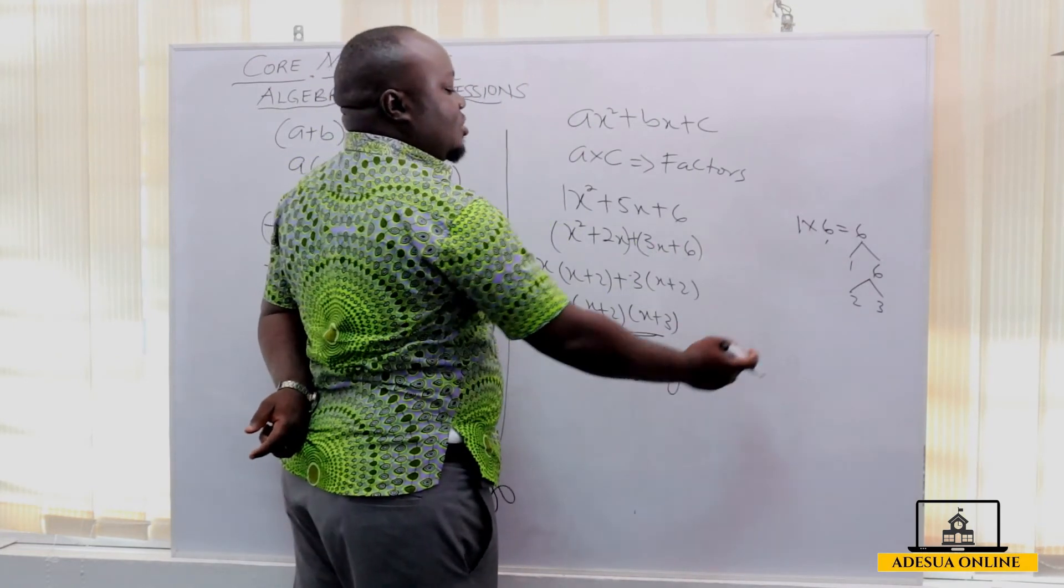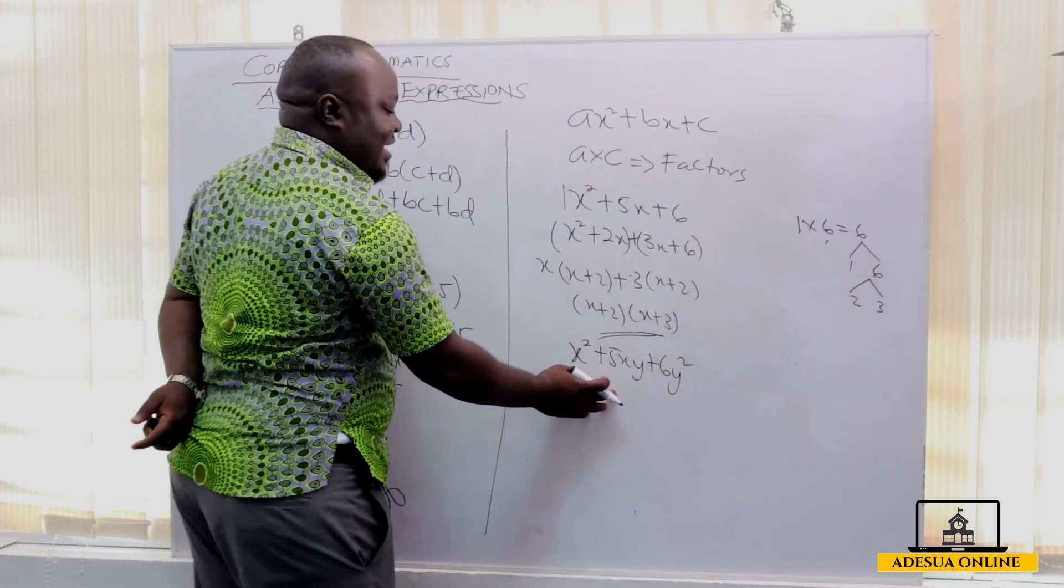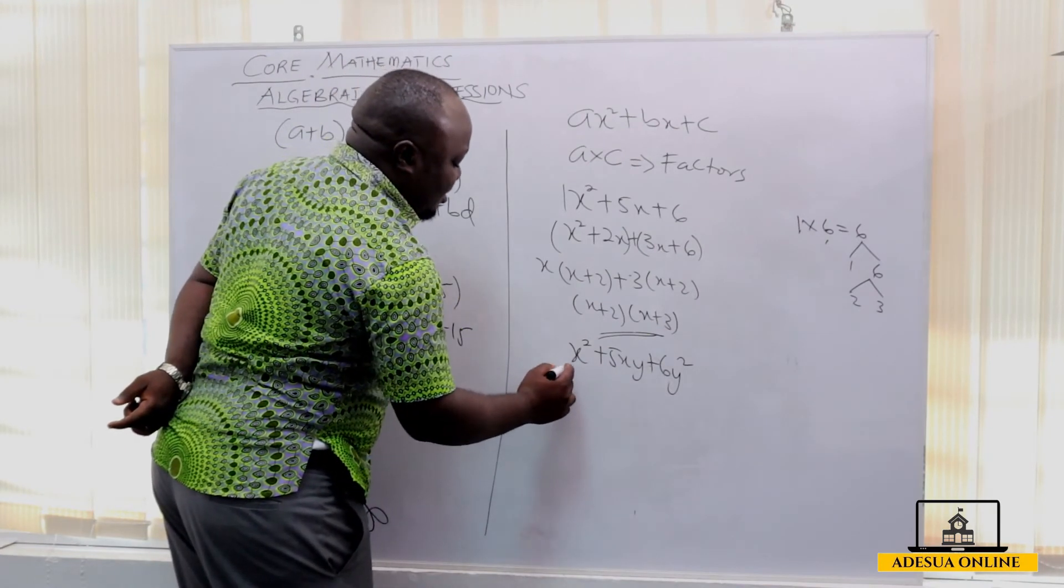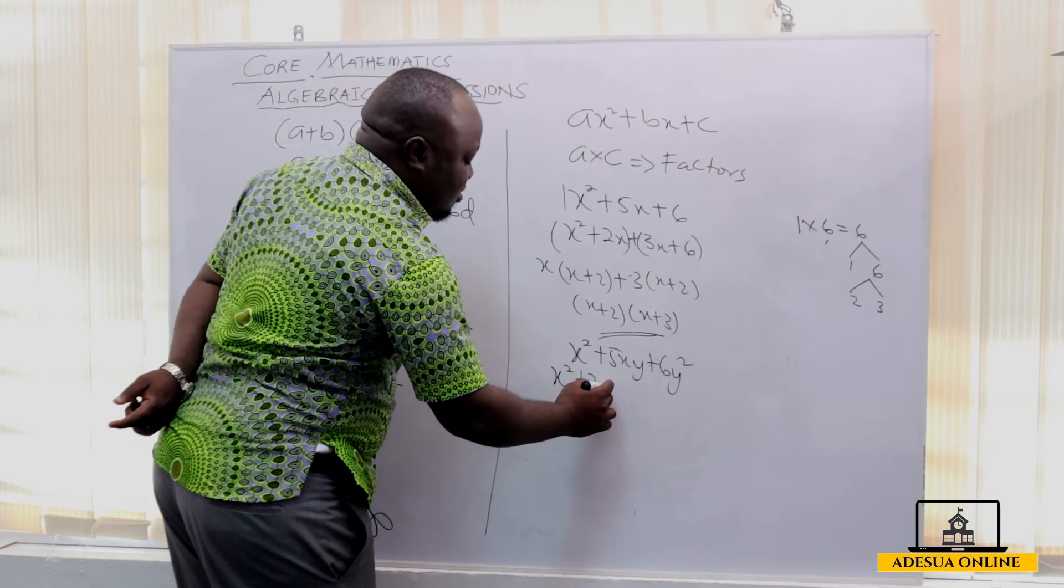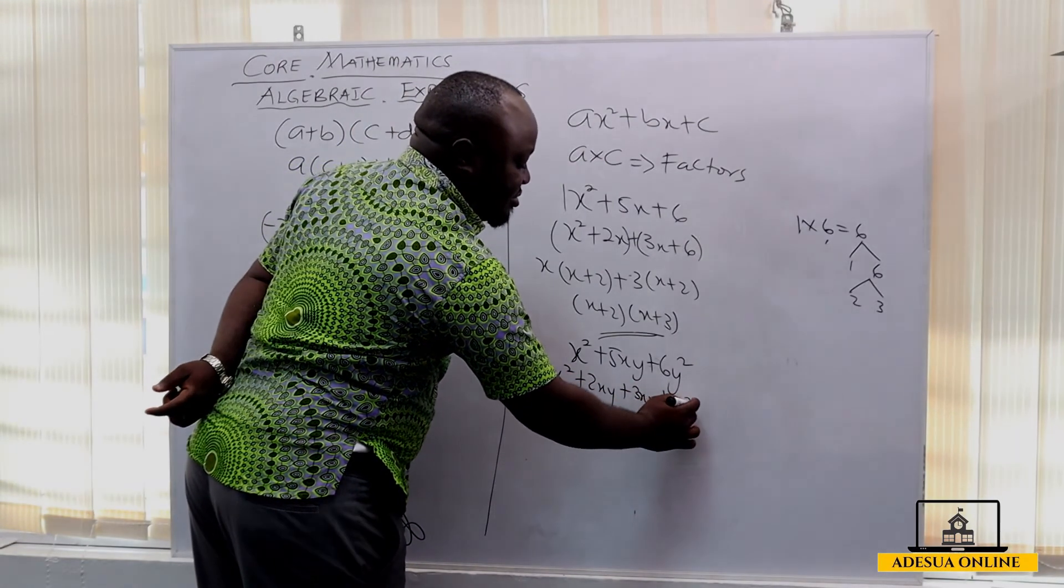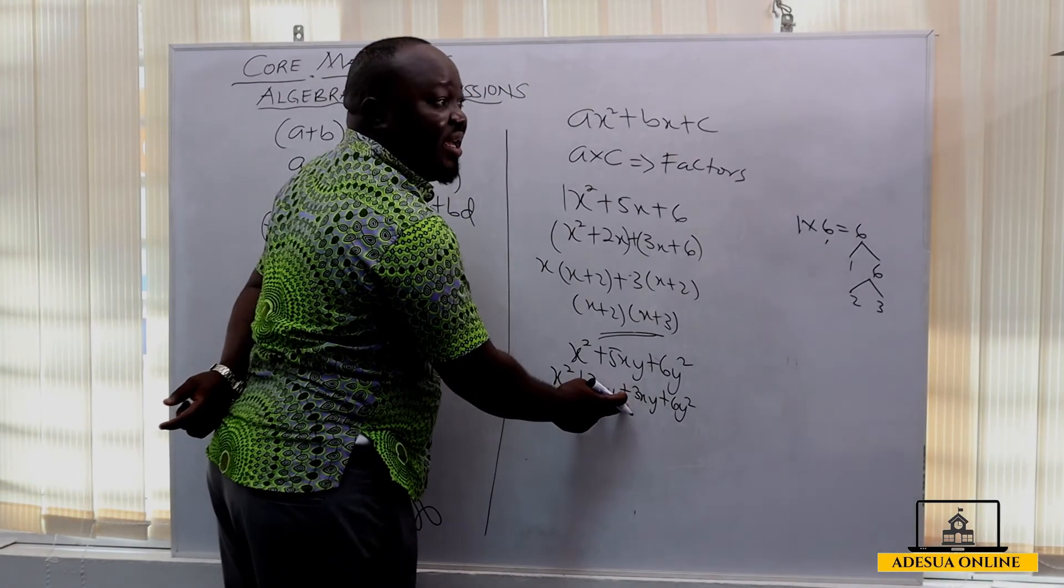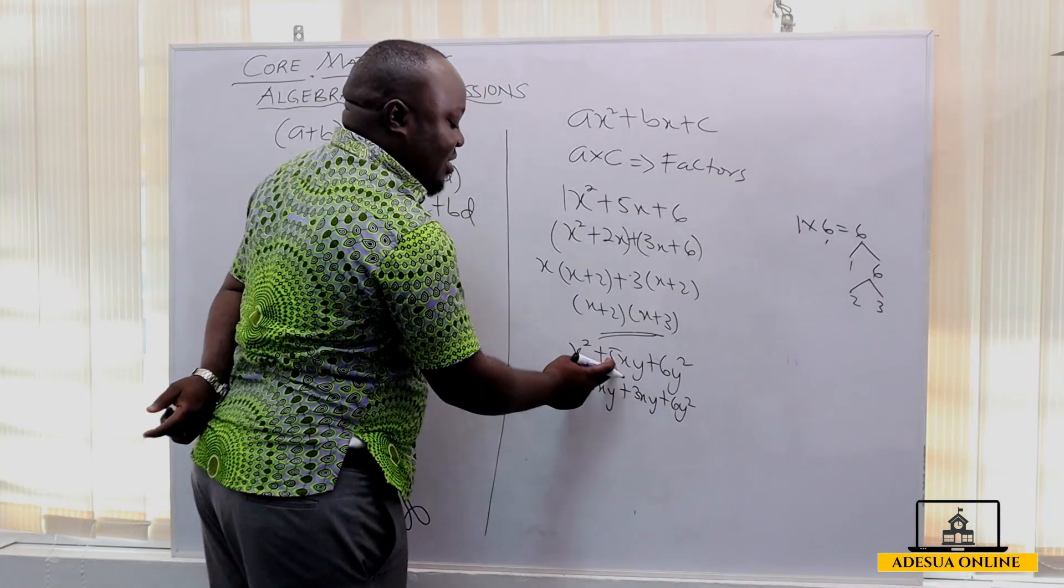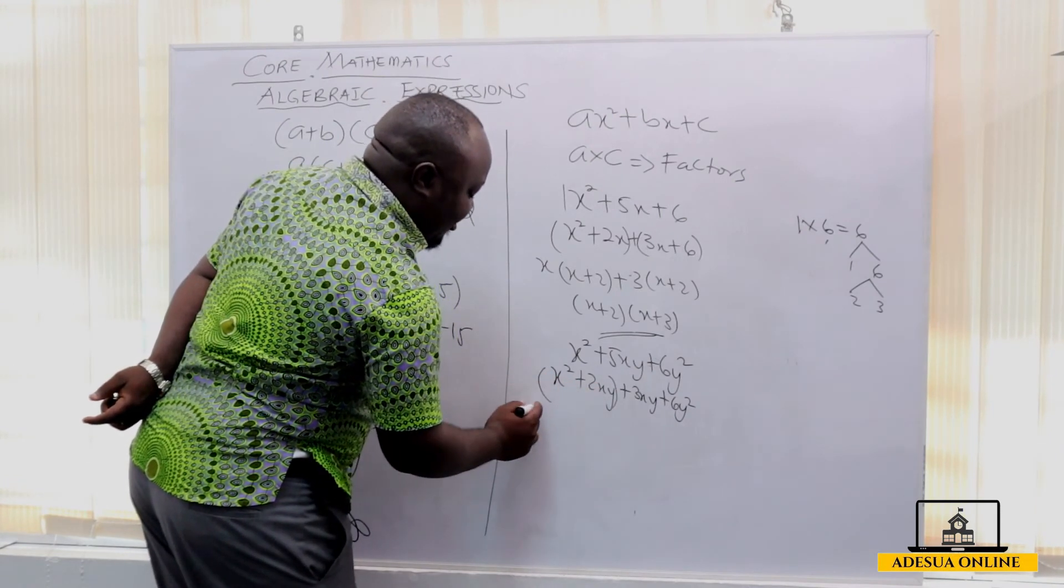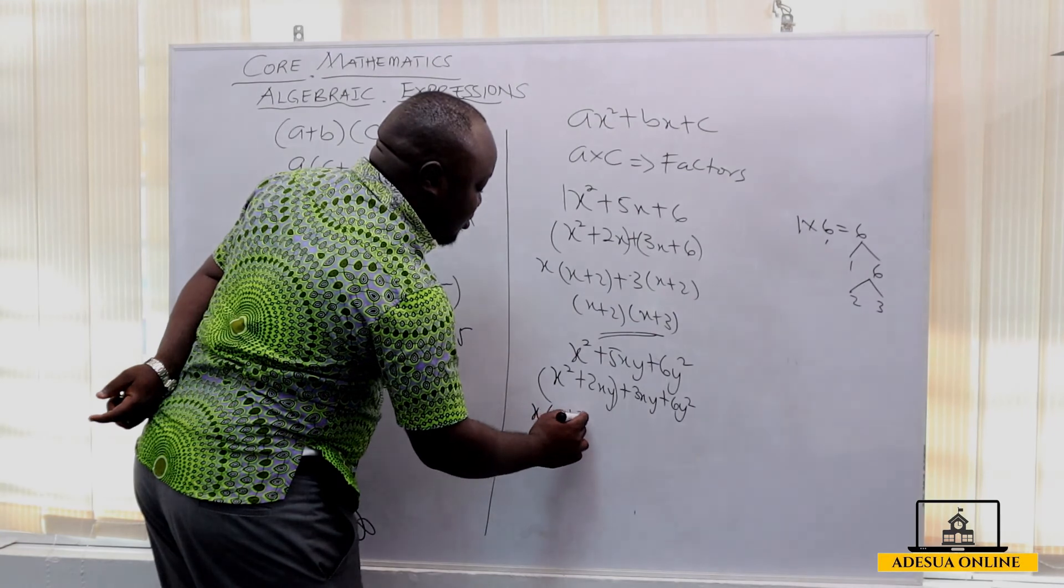Look for the factors 2 and 3. So just that if the factors are 2 and 3, my expression now becomes x squared plus 2xy plus 3xy plus 6y squared. Because 2xy plus 3xy is 5xy. So when we want the common variable here, x is common. So I factorize x out, so I have x plus 2y.